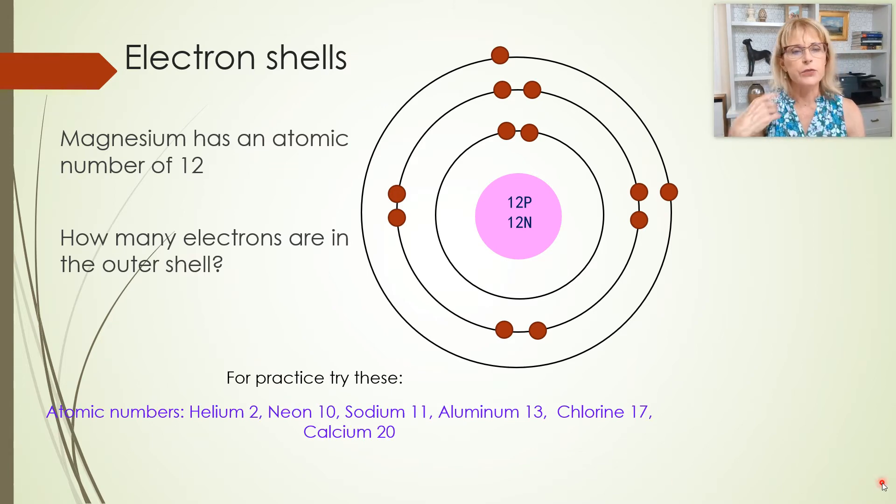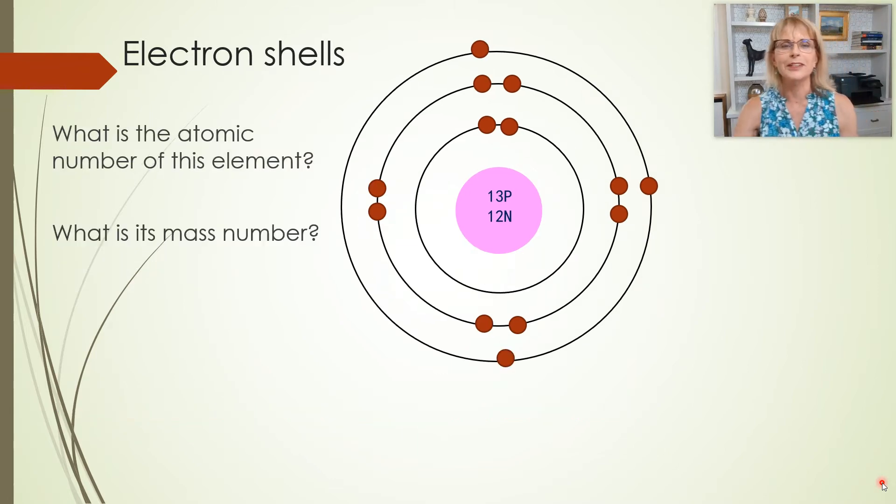Go ahead, practice for yourself. Practice helium, neon, whatever. Remember that the atomic number and the mass number are two different numbers you need to be able to calculate. You don't need to memorize them off the periodic table. So what's the atomic number of this element? It's got 13 protons, so its atomic number is 13. What is its mass number? 13 plus 12, 25. You should be able to do that.